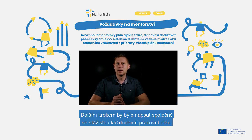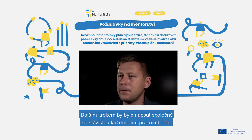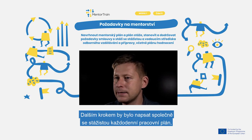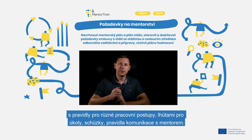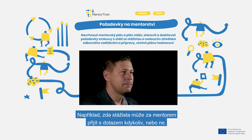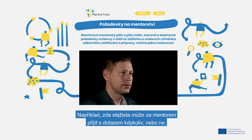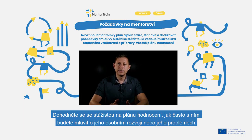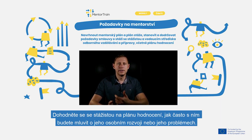The next step would be to write down together with the apprentice a work plan on a daily basis, with rules for different work procedures, deadlines for tasks, meetings, and communication rules with the mentor — for example, whether the apprentice can come to the mentor at any time to ask questions or not. Agree with the apprentice on the evaluation plan: how often you will speak with them about personal development or problems.